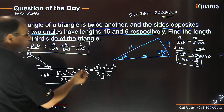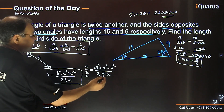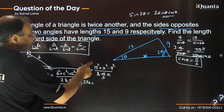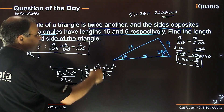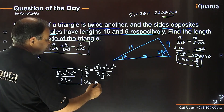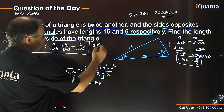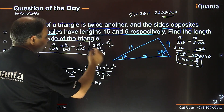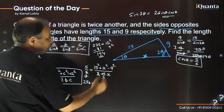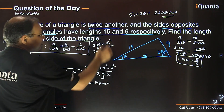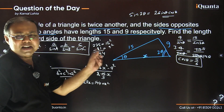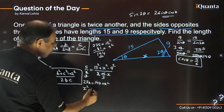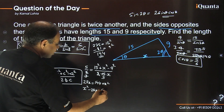Simplifying: 5X when moved to the numerator gives 25X equals 15 squared minus 9 squared plus X squared. Now 15 squared is 225 and 9 squared is 81, so 225 minus 81 is 144. You could also use the identity A squared minus B squared equals (15 minus 9)(15 plus 9). Rearranging, we get X squared minus 25X plus 144 equals 0.